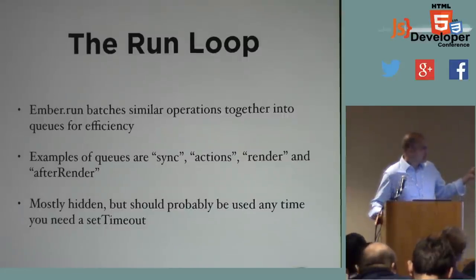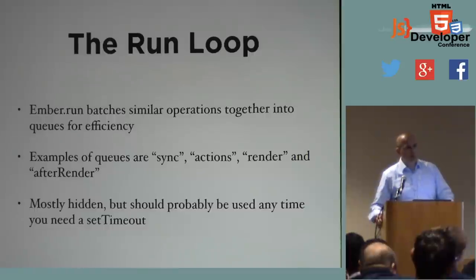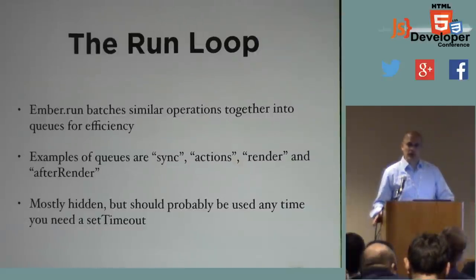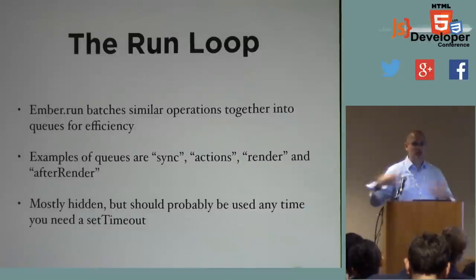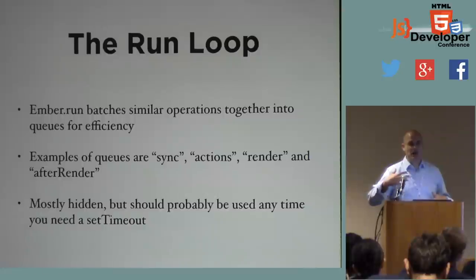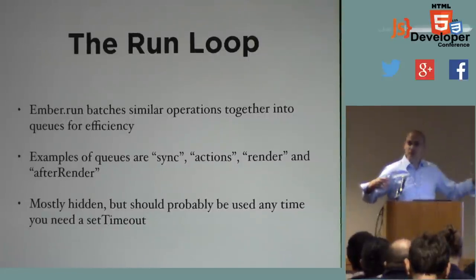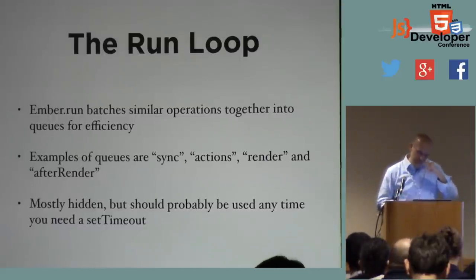The most common queues you'll come across in day-to-day development are the render and after render queues. Render is the queue containing all the jobs that actually need to modify the DOM. After render contains jobs that run immediately after the DOM has been modified. So if you have something that depends on DOM state, you put it in the after render queue and know that when it runs, the DOM will be up to date.